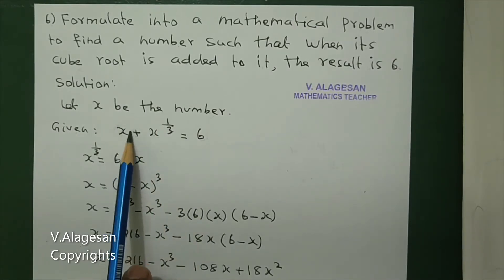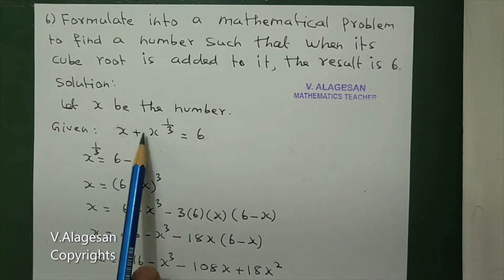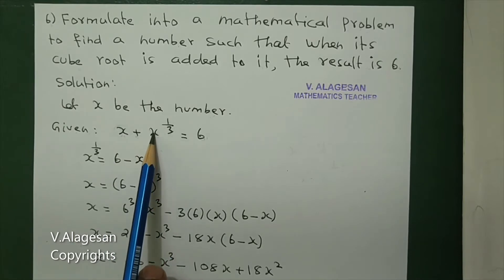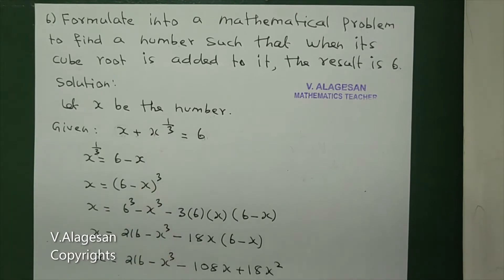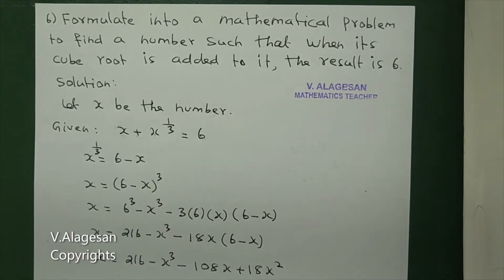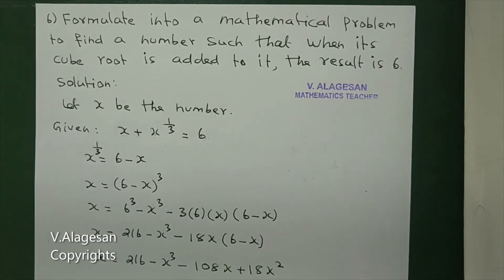Number plus cube root of that number. Cube root of x is x to the power one-third. Square root of x is x to the power one-half. That's why cube root of x is x to the power one-third.